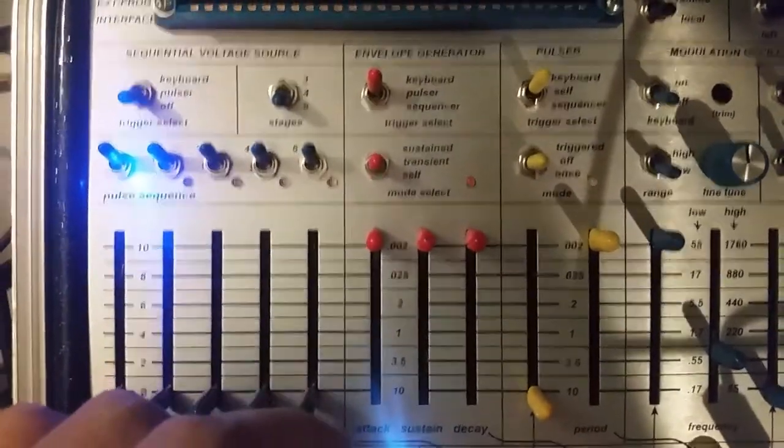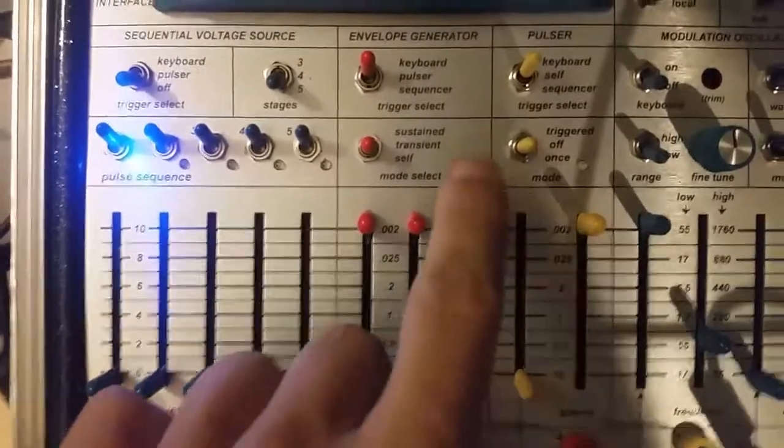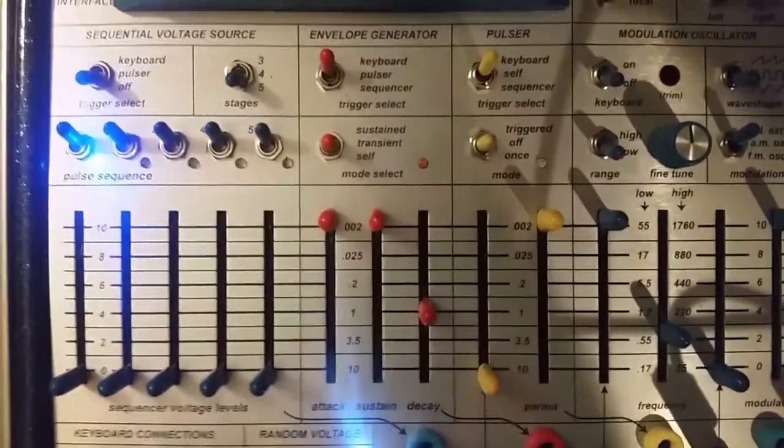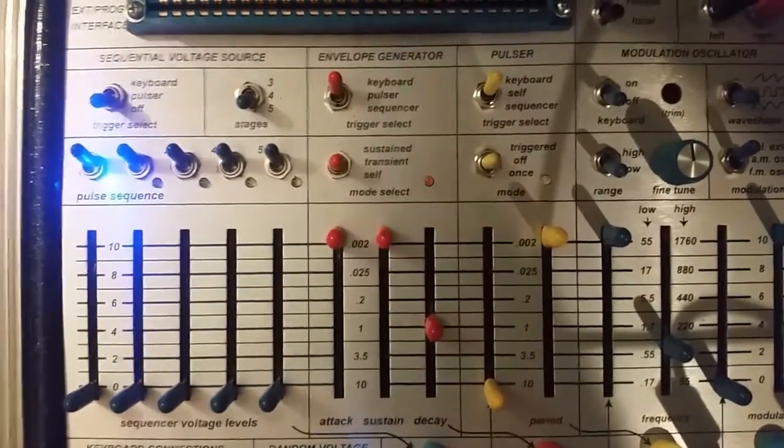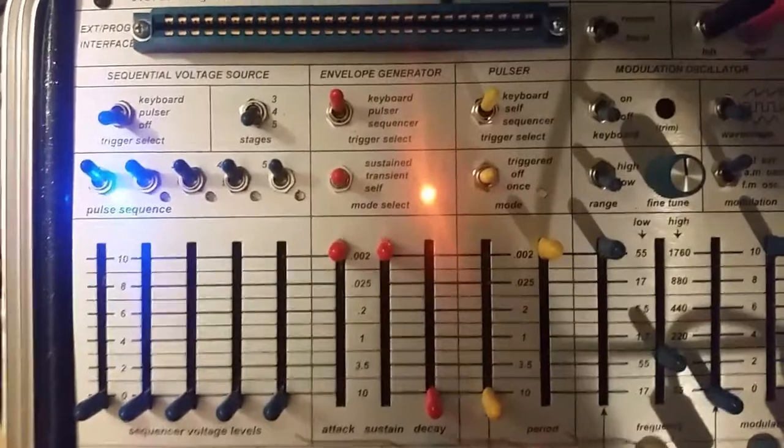So similar to the Pulsar, what we can do here to jump start the envelope generator into self-cycling mode is to give it a long decay so that when we hit the keyboard we still have voltage staying lit. We'll give it a longer decay similar to the Pulsar's long decay.